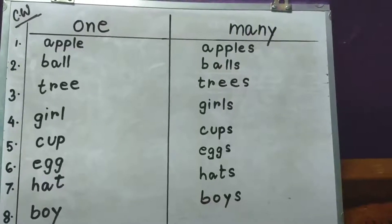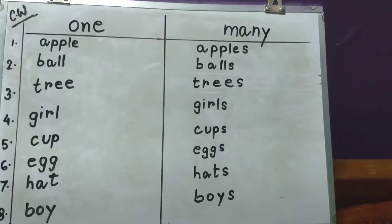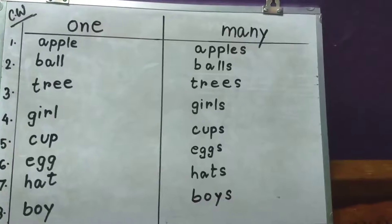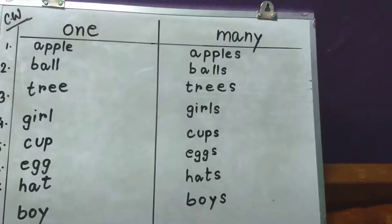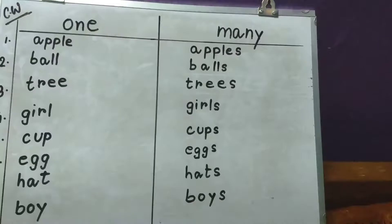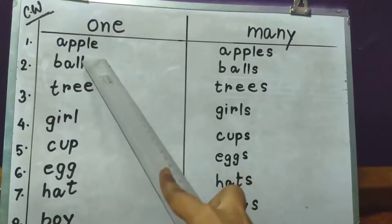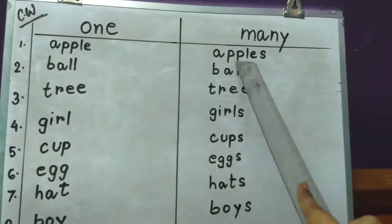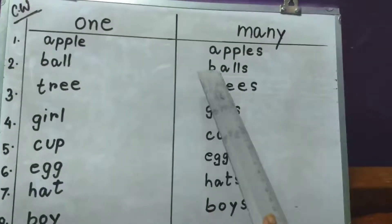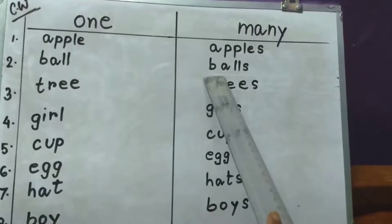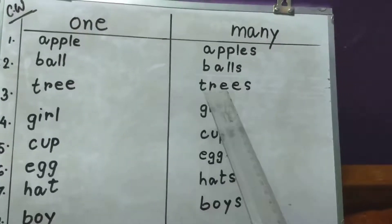Now we will learn some words to see how they form one to many by adding S. Apple, apples. Ball, balls. Tree, trees.